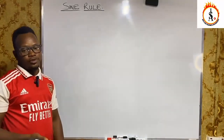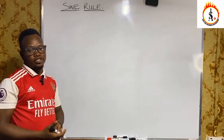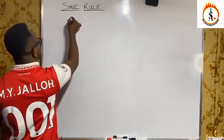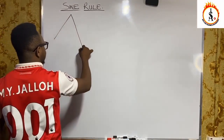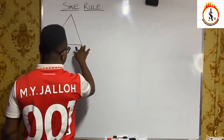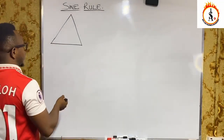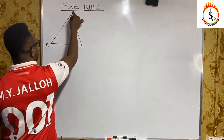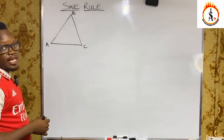To prove the sine rule, we are going to consider a scalene triangle. A scalene triangle is a triangle with none of its sides and none of its angles equal. We can label this triangle as triangle A, B, and C.